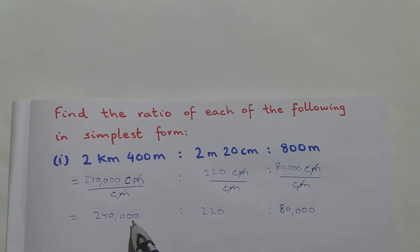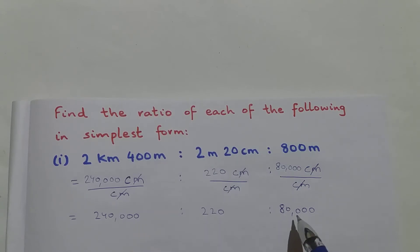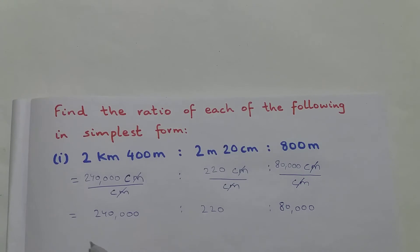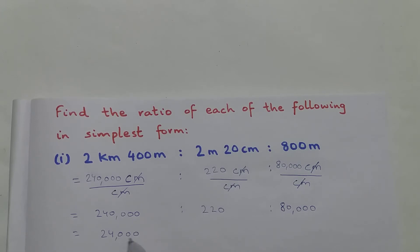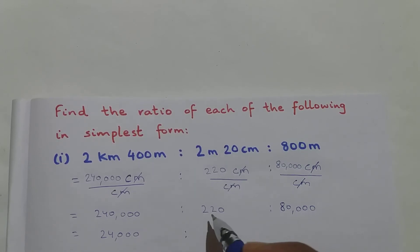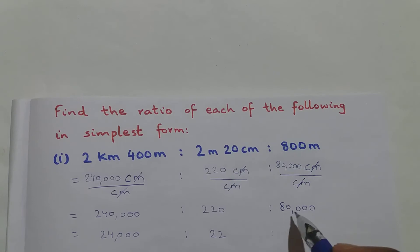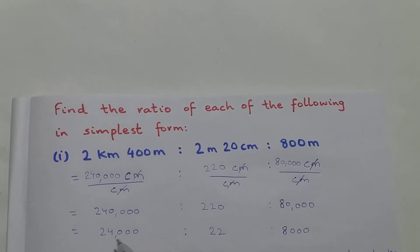All three of them are natural numbers and all three are divisible by 10. So I will divide all three by 10. 240,000 ÷ 10 = 24,000; 220 ÷ 10 = 22; 80,000 ÷ 10 = 8,000. So it becomes 24,000 is to 22 is to 8,000.